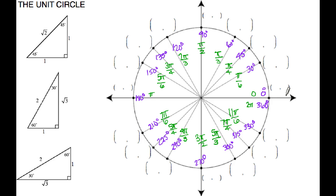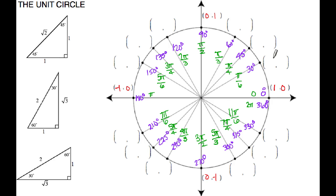From here, we need to figure out our ordered pairs. We know the radius of a unit circle is 1 unit, that's why it's called a unit circle. So the quadrantal ordered pairs are going to be (1, 0), (0, 1), (-1, 0), and then finally (0, -1). All of your other angle measurements come from your special right triangles.